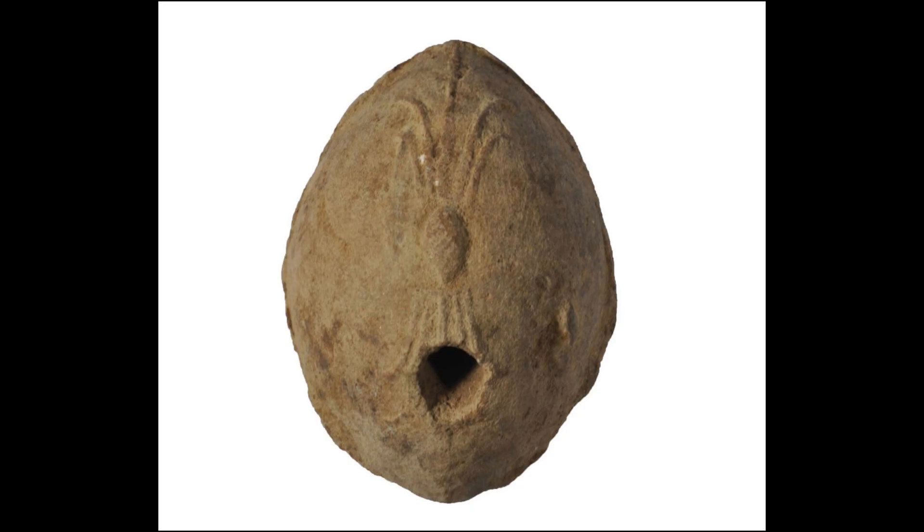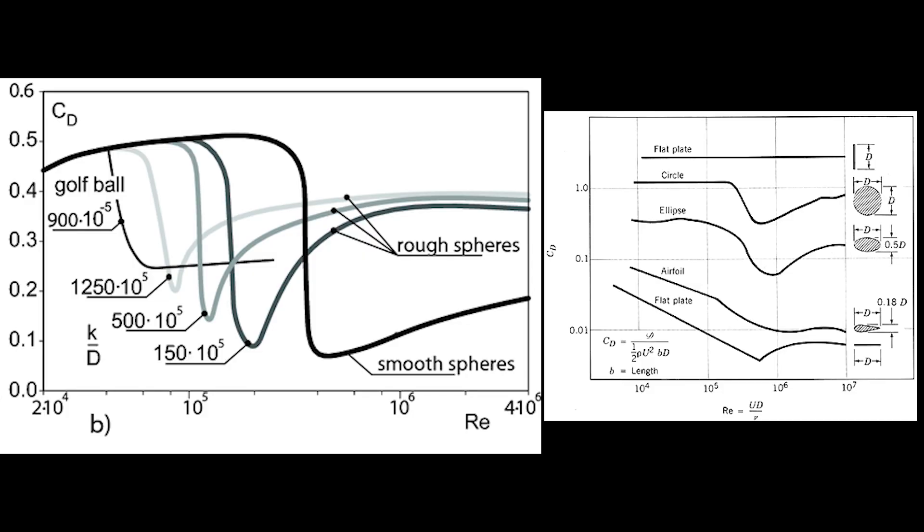whistle holes, or ridges may lower the critical Reynolds enough to reduce drag for a big part of the flight. This theory needs experimental confirmation.